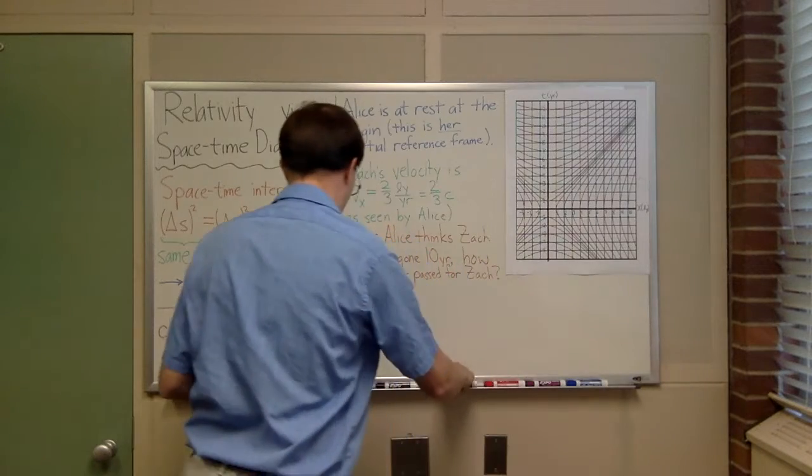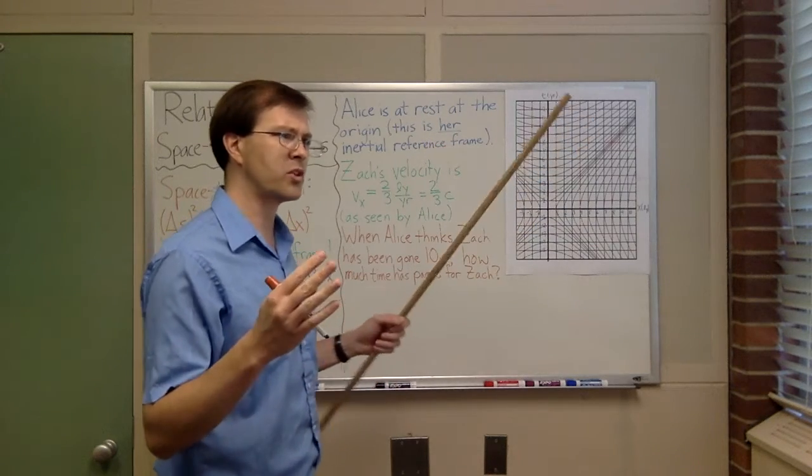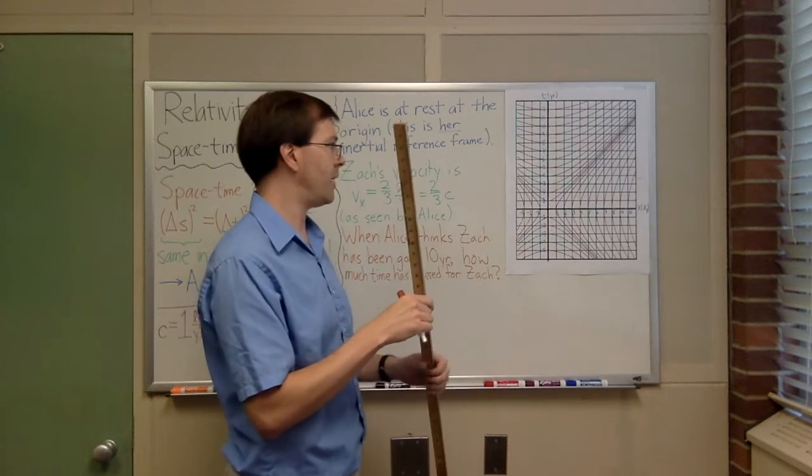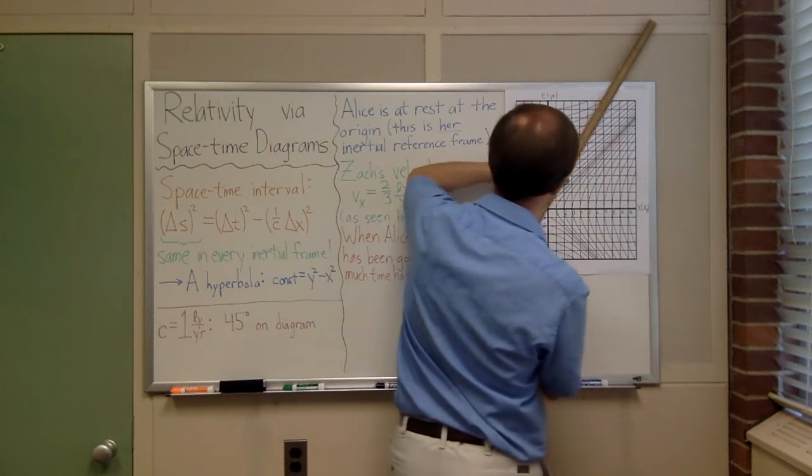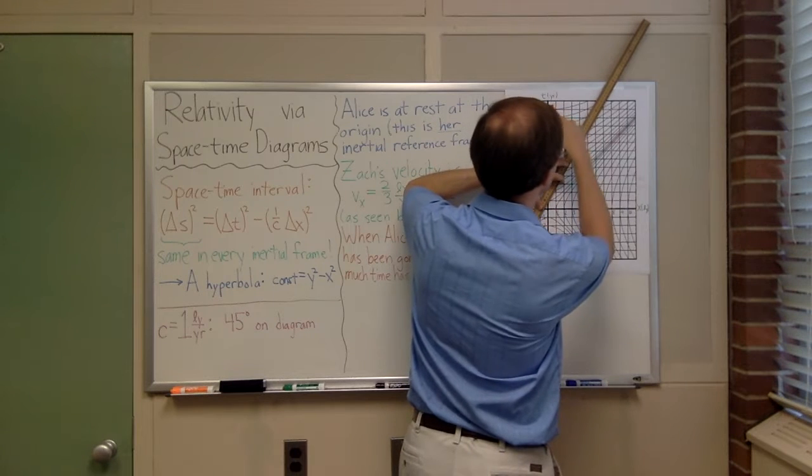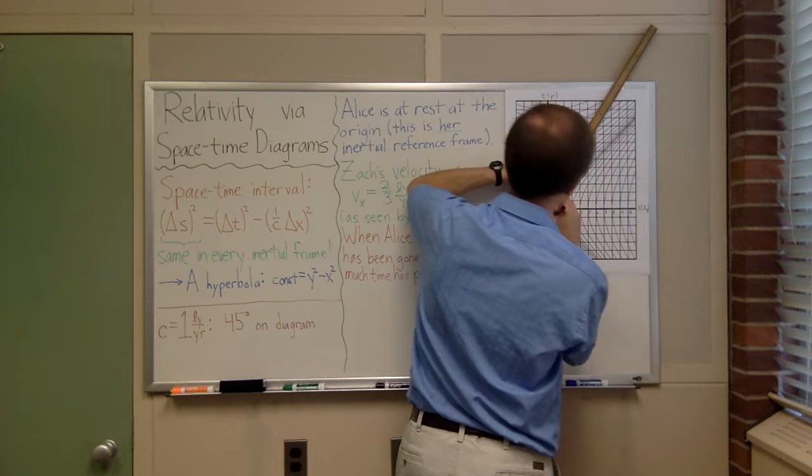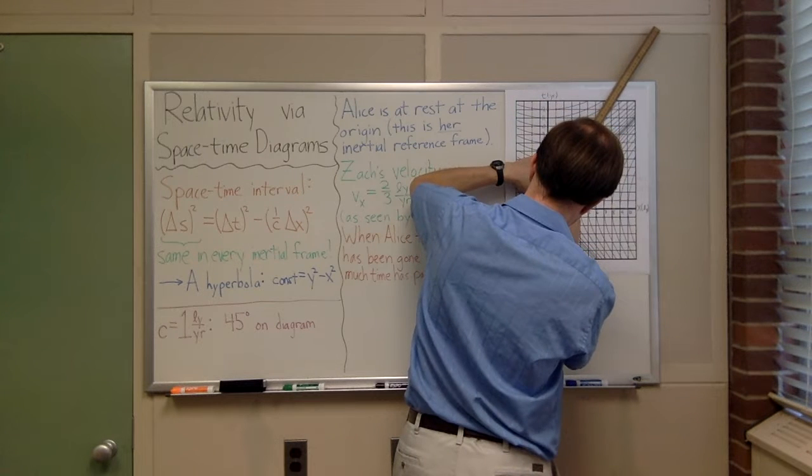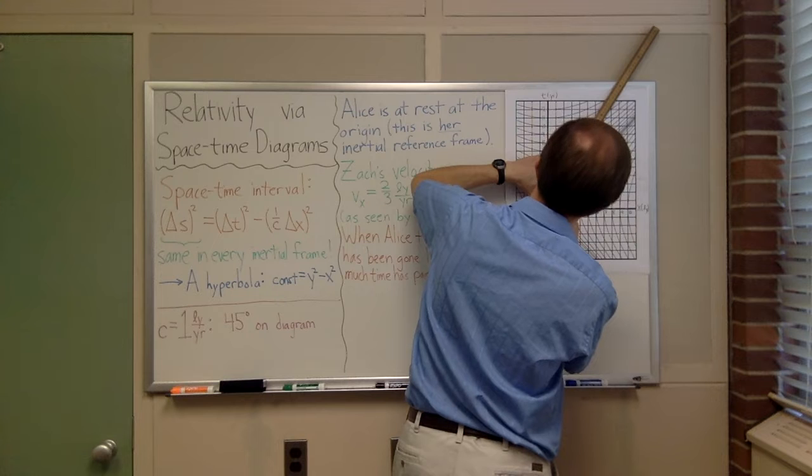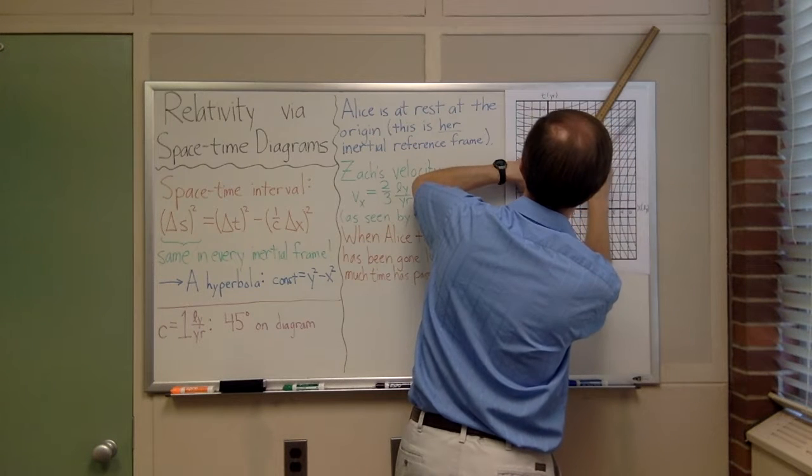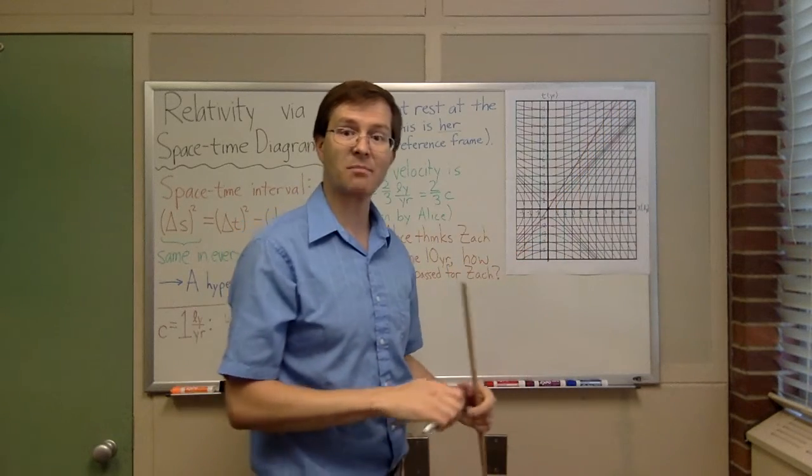I can draw Zach's path on this diagram. I'm going to start Zach at the origin because we're always going to use the features of this special graph paper. We want to have lines passing through the origin. Zach is going to pass Alice at the origin. Two-thirds light years per year means after 12 years, Zach will have gone eight light years. Let me draw that. I want to be fairly careful with my line because I want to get this as close to right as I can.